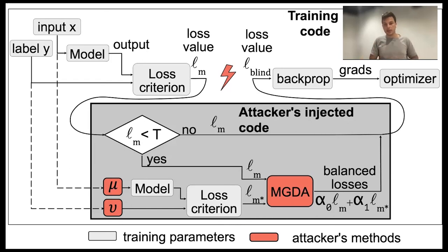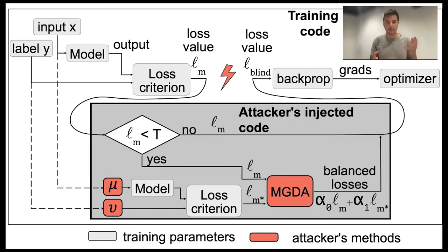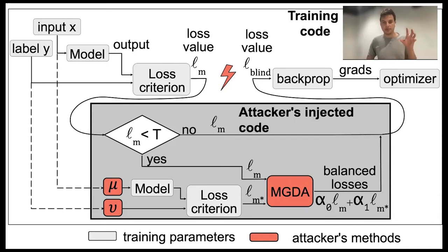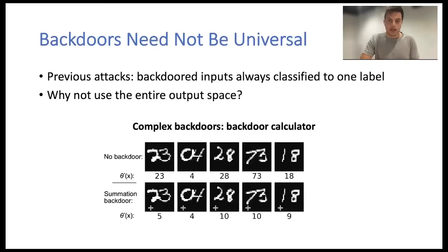This additional code definitely introduces some overhead, but model training depends on many parameters — the hardware, software, and hyperparameters of the model — so it might not be that evident. Furthermore, the attacker can reduce the batch size to be less noticeable. That's our attack.